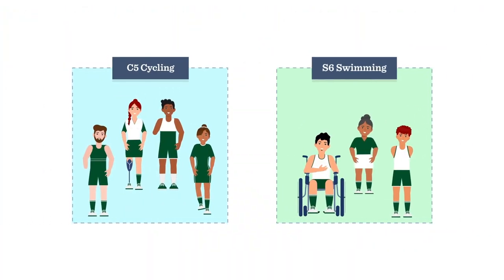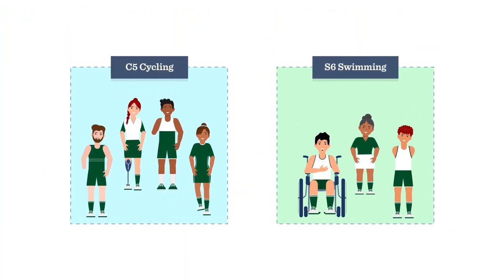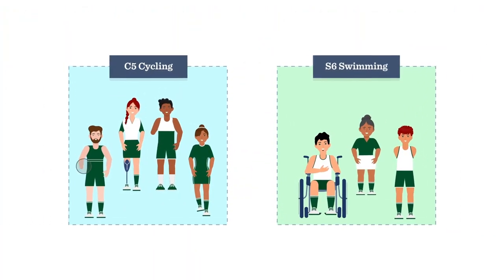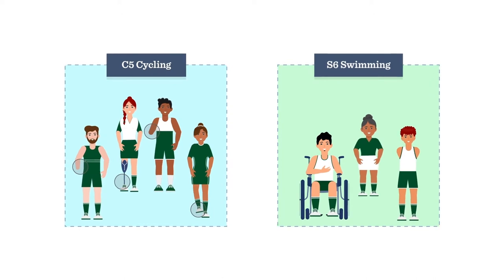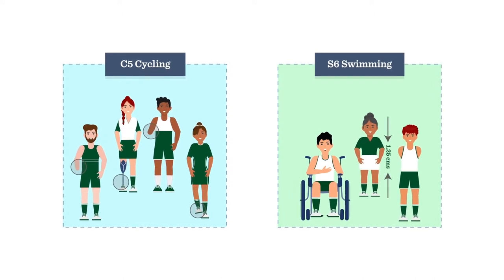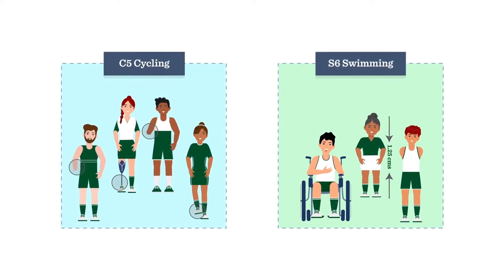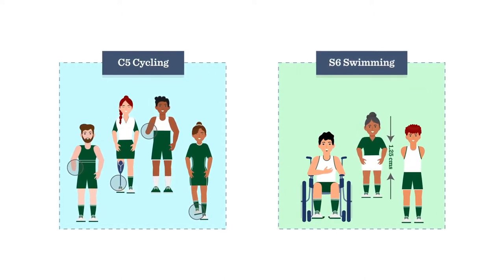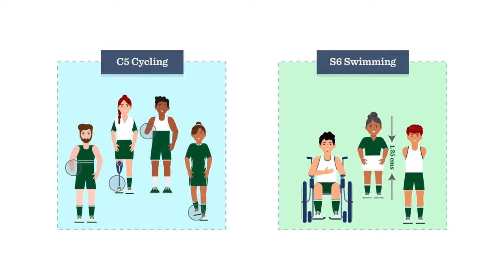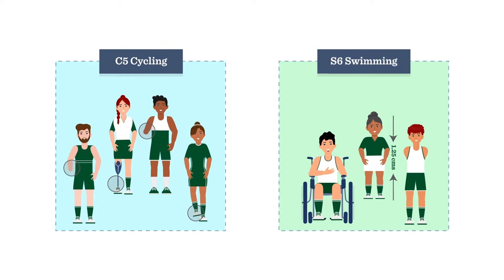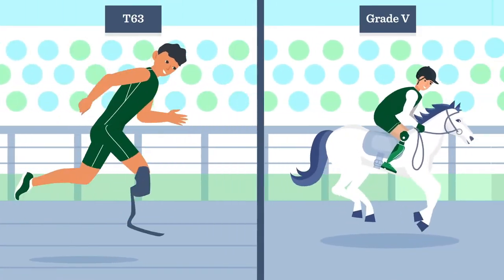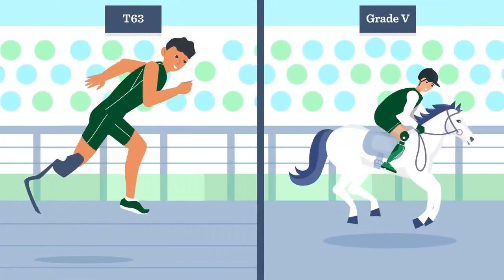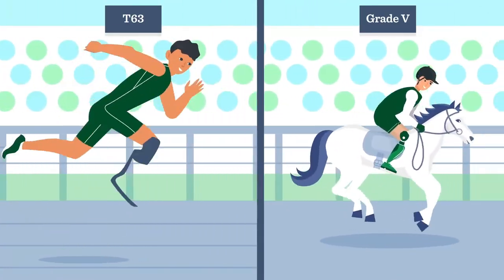You will notice that athletes within each class might have different types of impairment. However, their impairments affect the sport performance to a similar extent. The impact of impairments on each sporting discipline can vary accordingly.